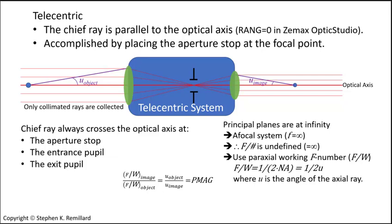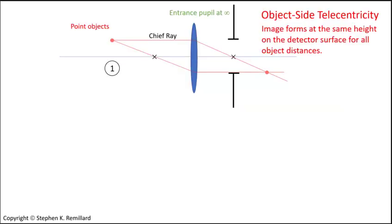Using a parallel chief ray as the criteria for telecentricity, there are three possible telecentric conditions. If the chief ray is parallel to the optical axis on the object side of the imaging system, then the telecentricity is object-side. This condition can be accomplished with a landscape configuration where the aperture stop is positioned at the rear focal point of the lens or lens group. When telecentricity is object-side, the image height is the same for all object distances.